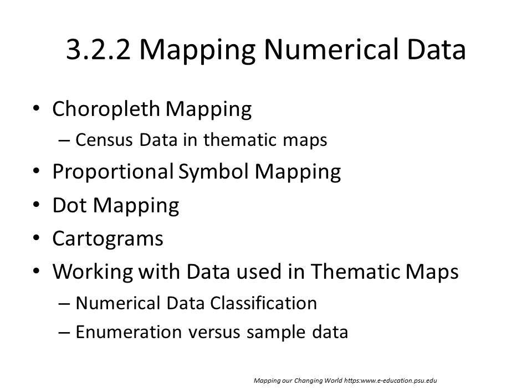When we look at how we map numerical data, several different categories of mapping options are available. These include choropleth mapping, such as working with census data in thematic maps, proportional symbol mapping, dot mapping, and cartograms. And then at the end, we'll talk a bit more about some of the details of working with data that we use in thematic maps.